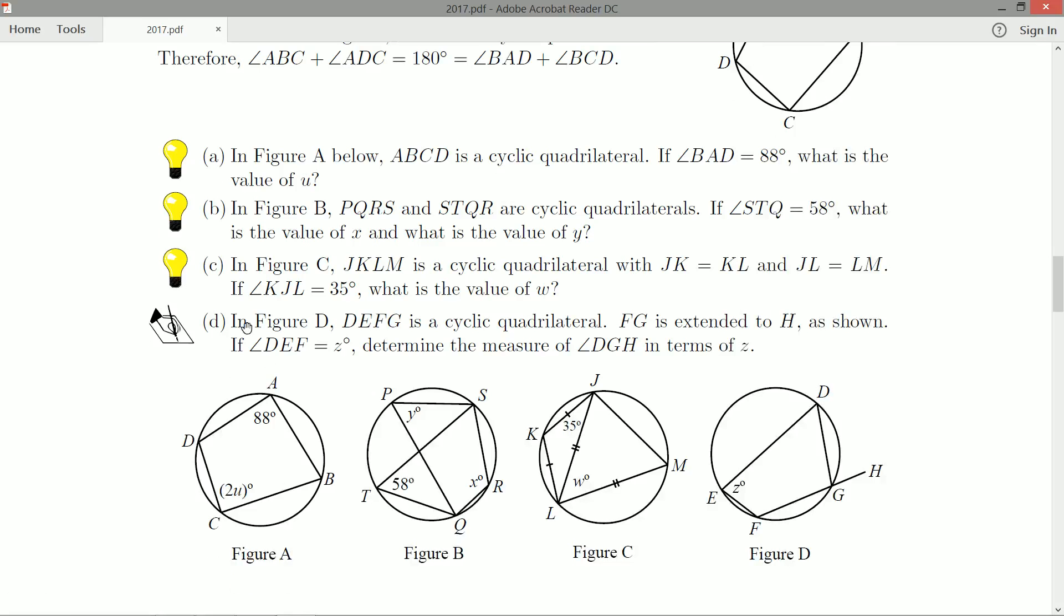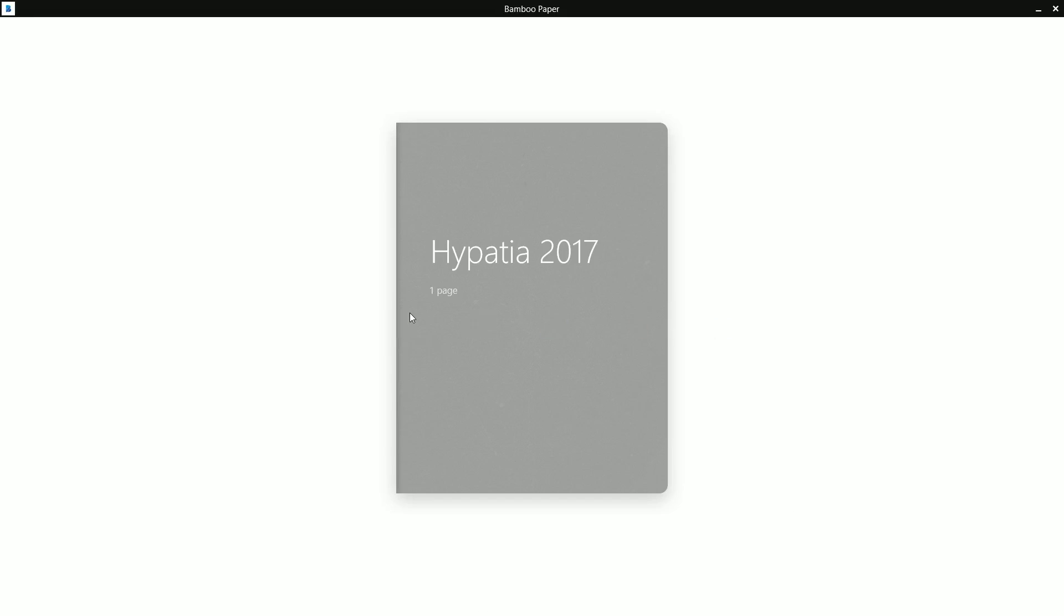We have four questions, three of them light bulbs, one written, and all four have an associated figure. Part A: in figure A below, ABCD is a cyclic quadrilateral. If angle BAD is 88 degrees, what is the value of u? The opposite angle is 2u degrees, so they're really just testing your reading comprehension skills here.